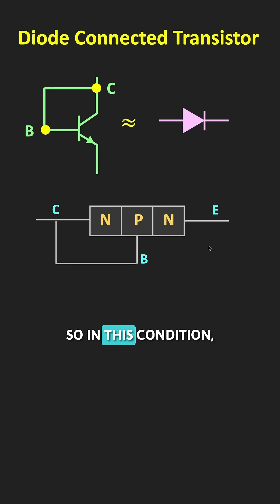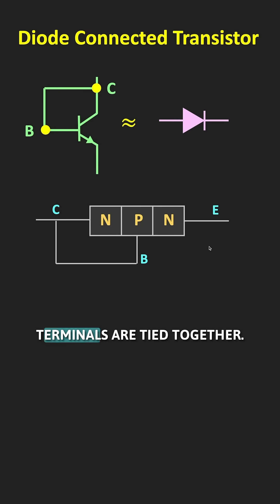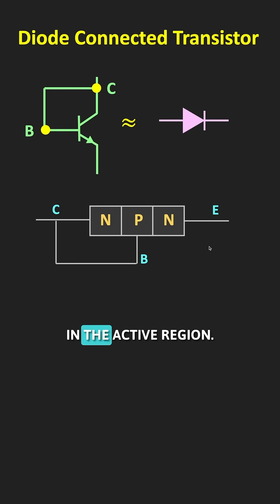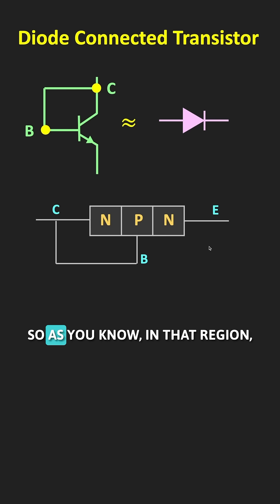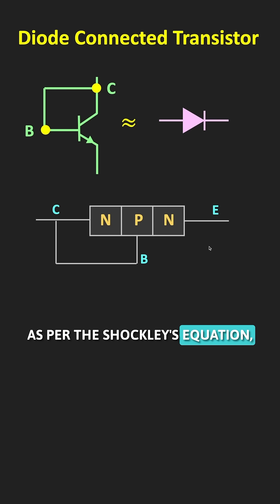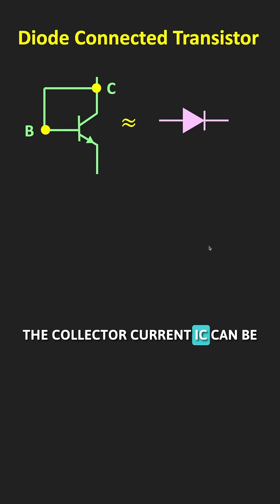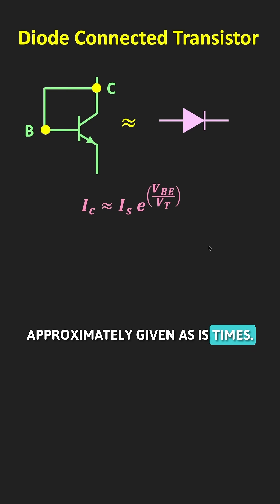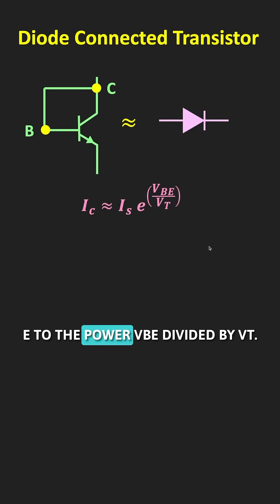In this condition, since the base and the collector terminals are tied together, when we bias this transistor it will operate in the active region. In the active region, as per Shockley's equation, the collector current IC can be approximately given as Is times e to the power VBE divided by VT.